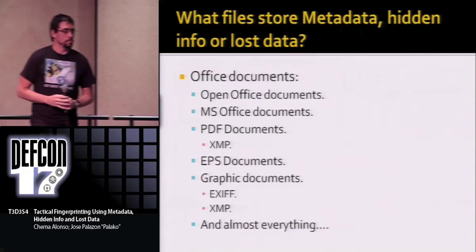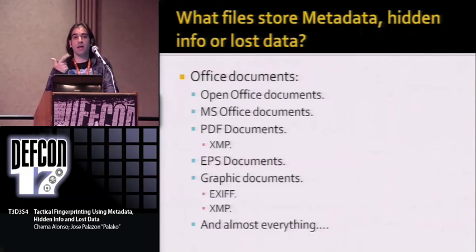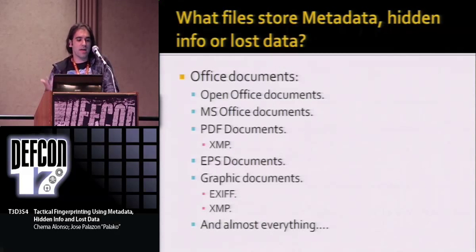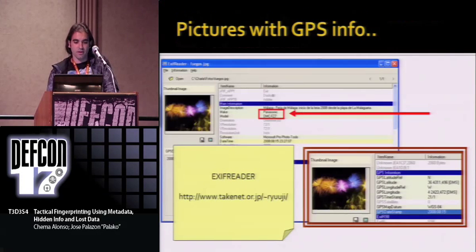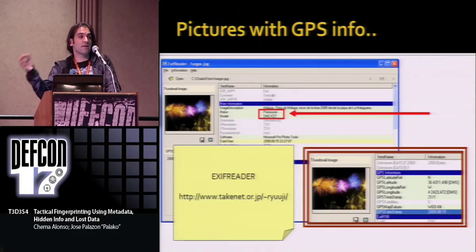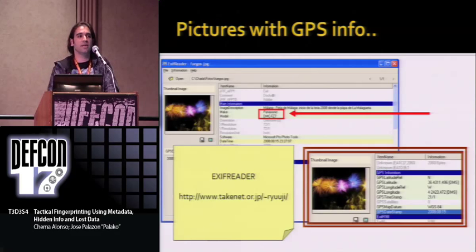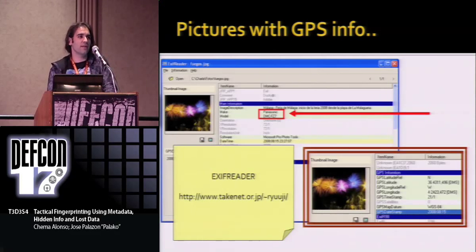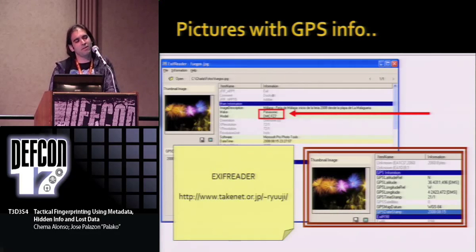In the end, all kinds of files store metadata. You can extract metadata and hidden info from Microsoft Office documents, OpenOffice documents, PDF, EPS, graphic documents — looking at XMP or EXIF information — and almost everything. In this example, a picture with EXIF data can reveal the mobile device used to take the picture, the software on the device, and even the date when the picture was taken. In fact, two months ago a girl sent me a picture, I said 'you look great,' and she said 'thank you.' I asked 'how old is this picture?' She said 'only two months.' But the picture had been taken in 2006.